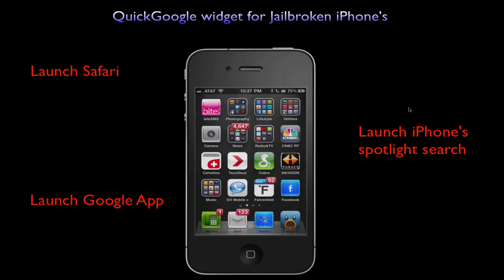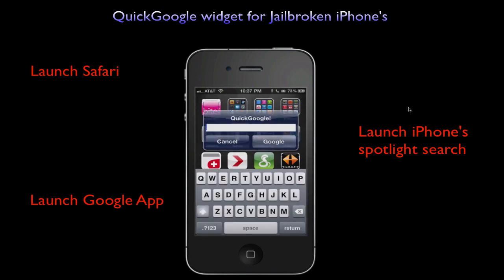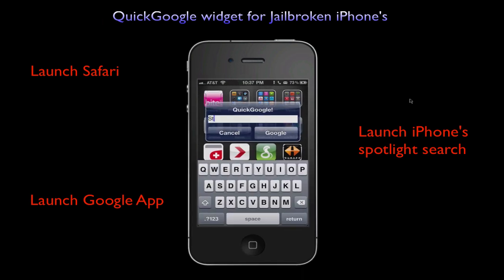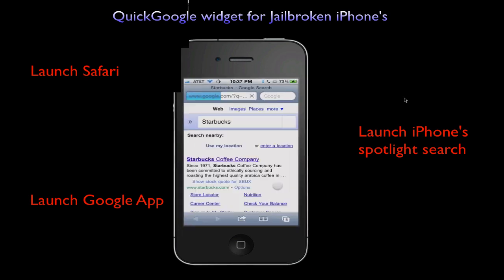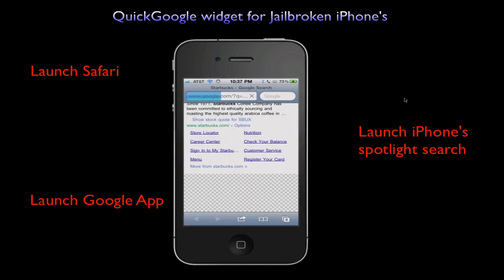Now from any screen I can double tap on the top bar and, as you can see, the Quick Google widget pops up. You can enter your search criteria. The results, however, are launched within the regular browser, like so.